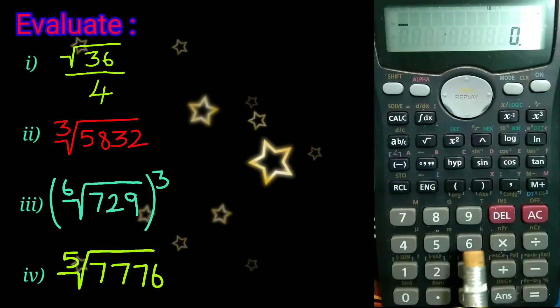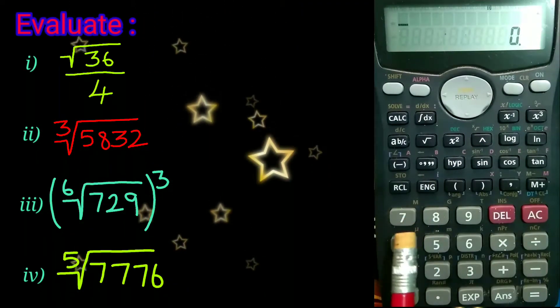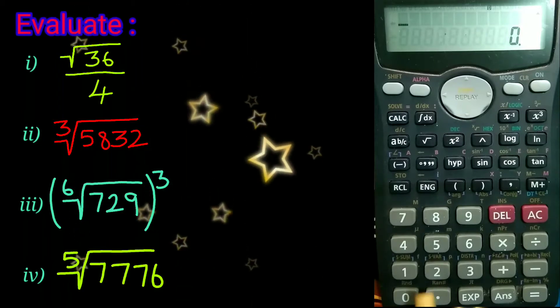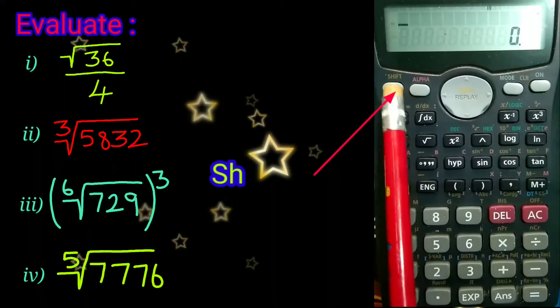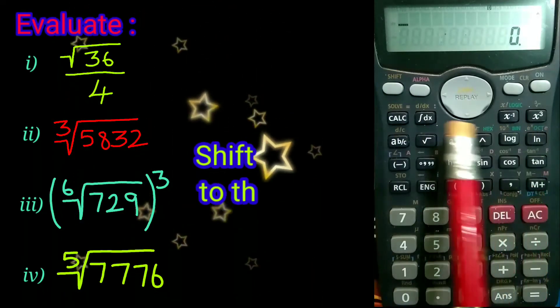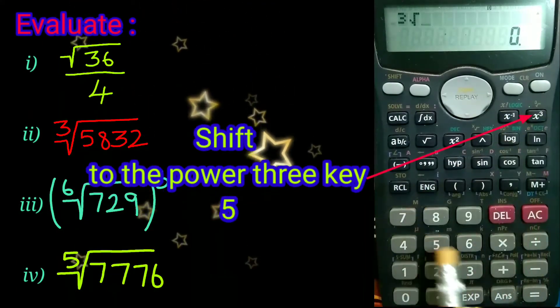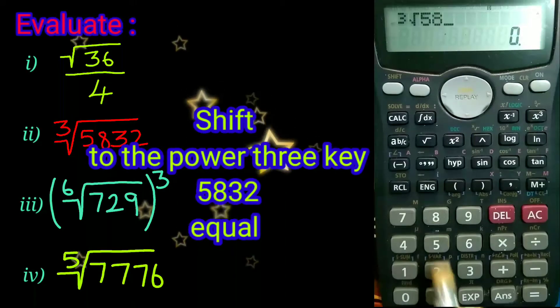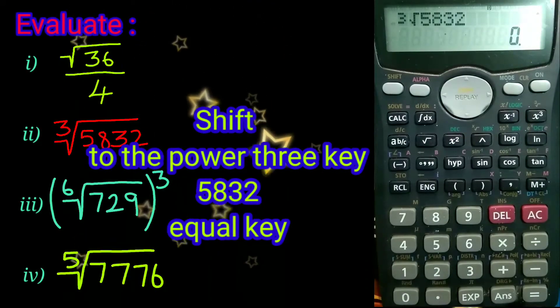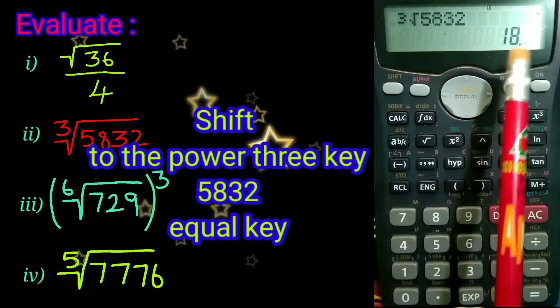Next, cubic root of 5832. To calculate that, press the shift key followed by the power 3 key and type 5832, then equal to. We have 18.